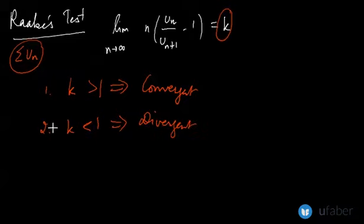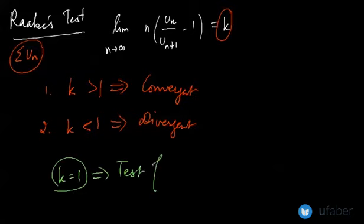Now again, this test is of no use if the value of k becomes 1. So the test fails at k equals 1, which is the same as the D'Alembert ratio test.